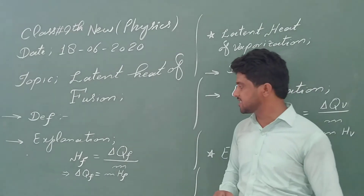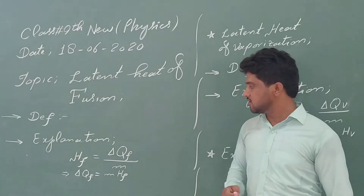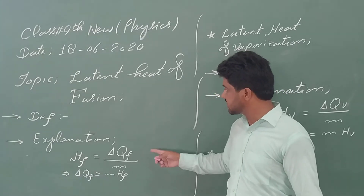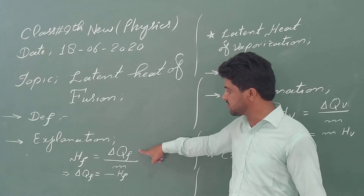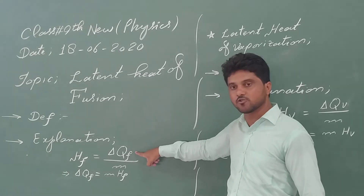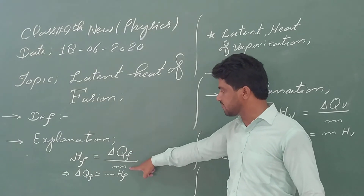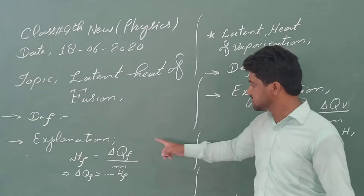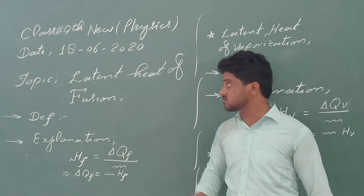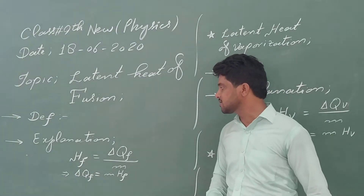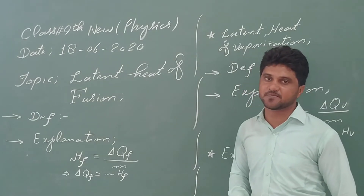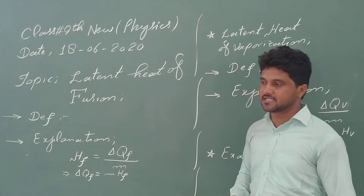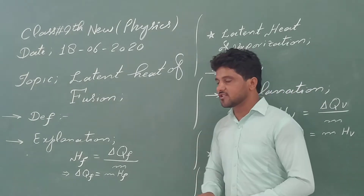The value of the latent heat of fusion for ice is 3.36 multiplied by 10 raised to the power 5. The unit is joules per kilogram.